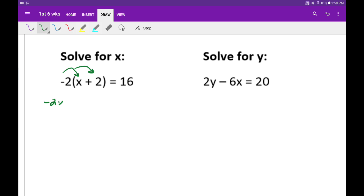So we get negative 2x minus 4 equals 16. Alright, then we're going to solve for the x like before. Add 4 to both sides. Those cancel. Bring down the negative 2x and then we get 20.